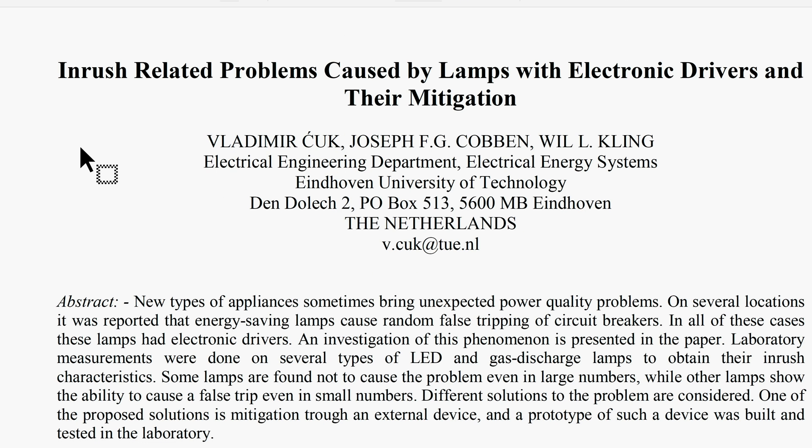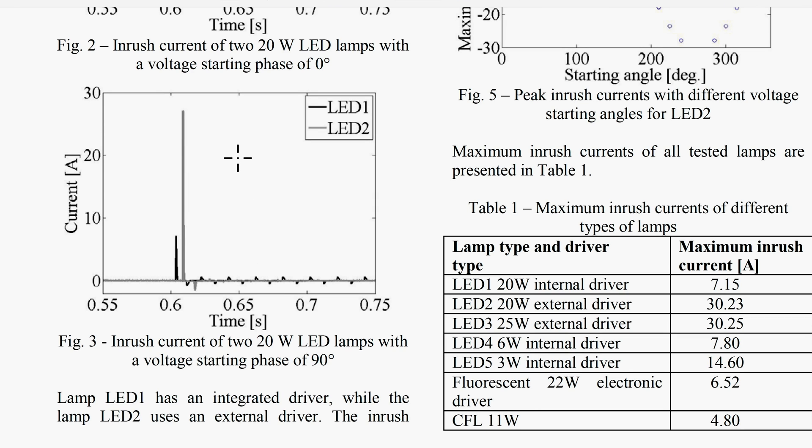Then I have located this article which says inrush related problems caused by lamps with electronic drivers and their mitigation. Right. I'm just going to show you two things that the authors have demonstrated. Here are some of their waveforms. And one can see that they were just testing a 20 watt LED lamp. And you can see that they also had these very high peaks. Considering that this is the 20 amp mark, so this is above 25 amps. And considering that this is only a 20 watt LED.